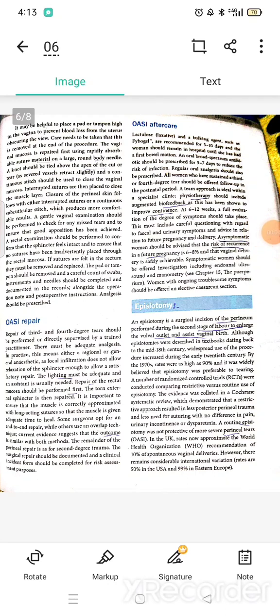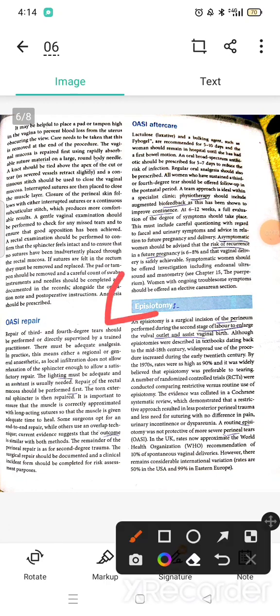In this video, we will discuss the obstetric topic episiotomy. This is also very important. What is episiotomy? We call it a small operation. Episiotomy is a surgical incision of the perineum performed during the second stage of labor to enlarge the vulva outlet and assist the vaginal birth. We give the surgical incision of the perineum in the second stage of labor so that the vulva outlet enlarges and assists the vaginal birth.